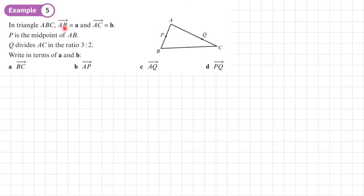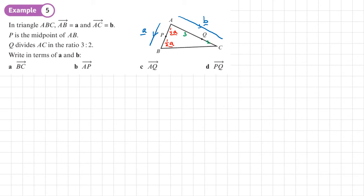Example five: in triangle ABC, vector AB equals a and vector AC equals b. P is the midpoint of AB, so AP equals half a and PB equals half a. Q divides AC in the ratio 3:2, making five parts in total. AQ equals three-fifths of b going that way, and QC equals two-fifths of b going the remaining way.